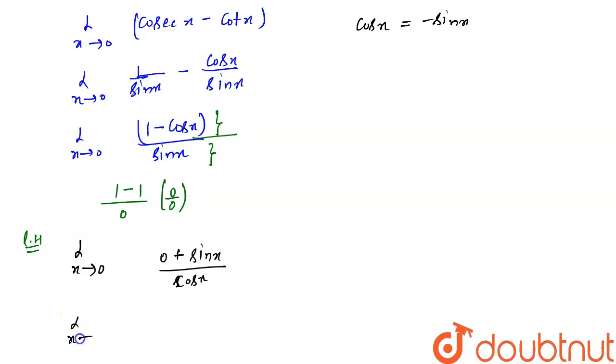So from here, we will have limit x tends to 0, sin x upon cos x. And if we put here x equal to 0, so we will get sin 0 is 0 upon 1, which is equal to 0.